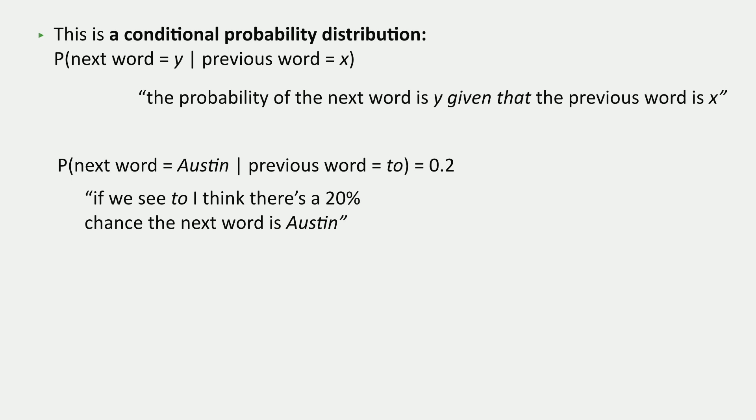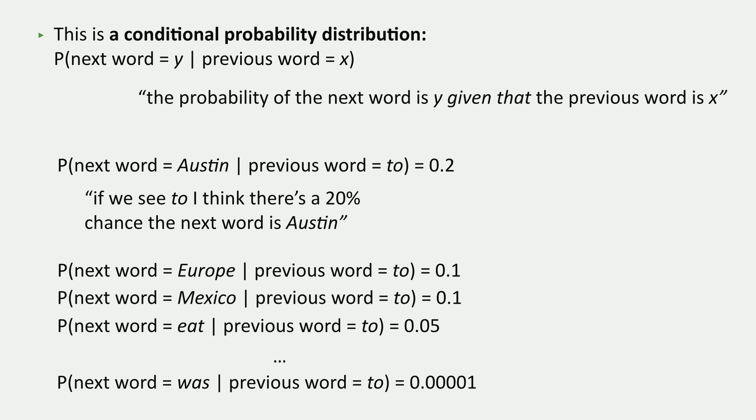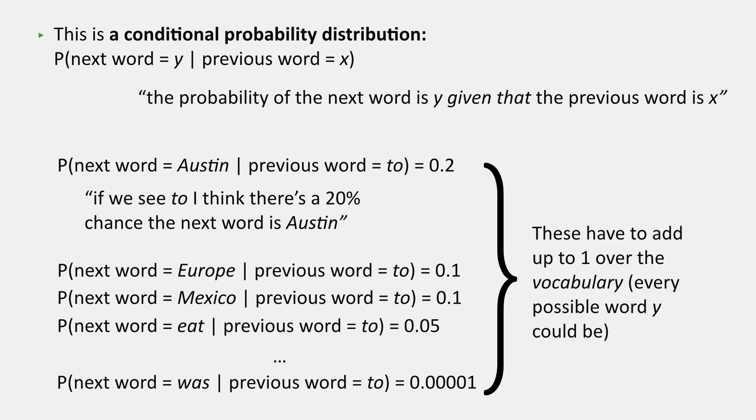But for right now, I'm just making these up. And so I'm going to make up probabilities for all the other words as well. And again, a lot of things are going to have some small probability under this model. And they all have to add up to 1 over the vocabulary, over every possible word that y could be.